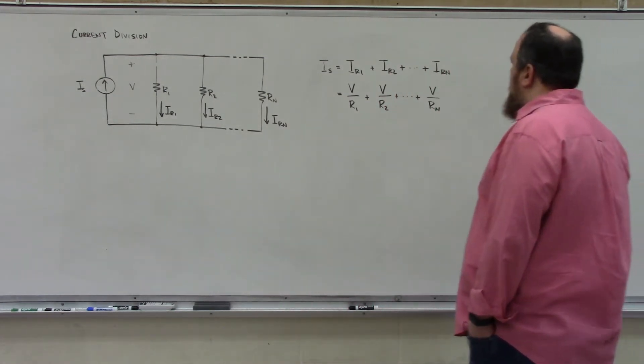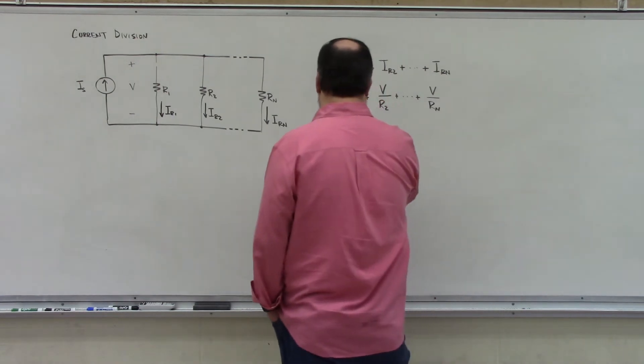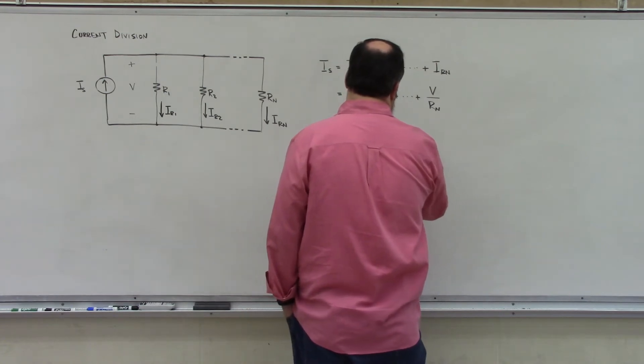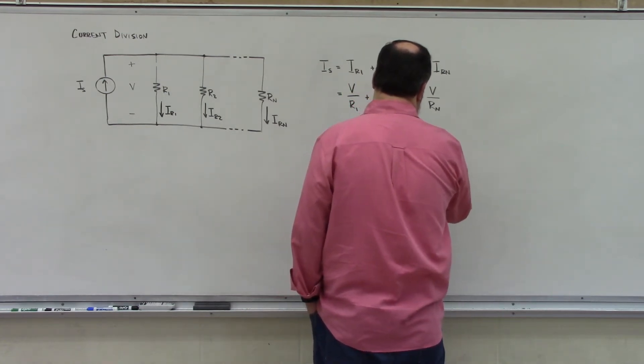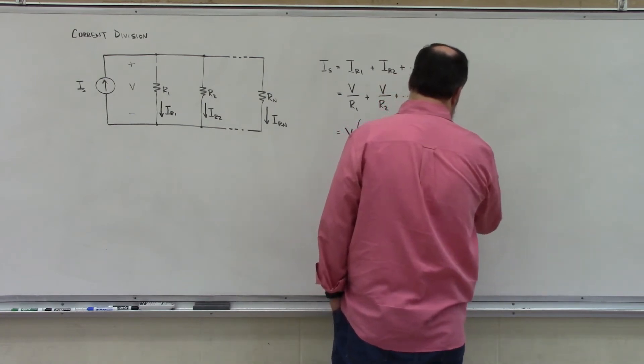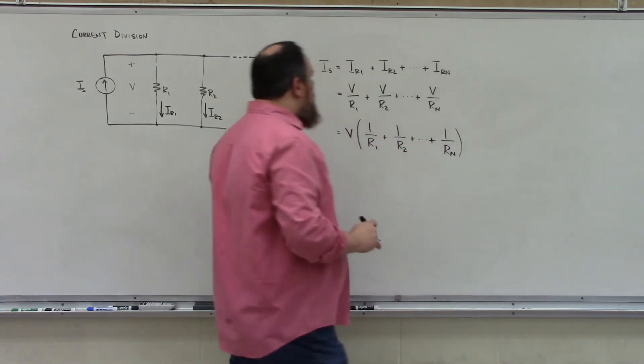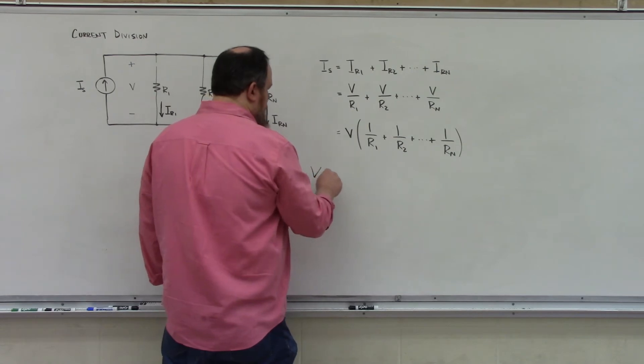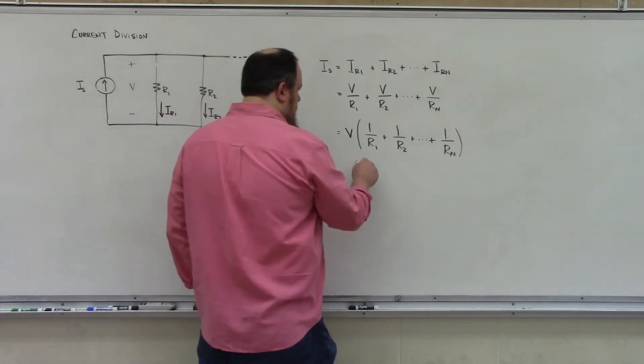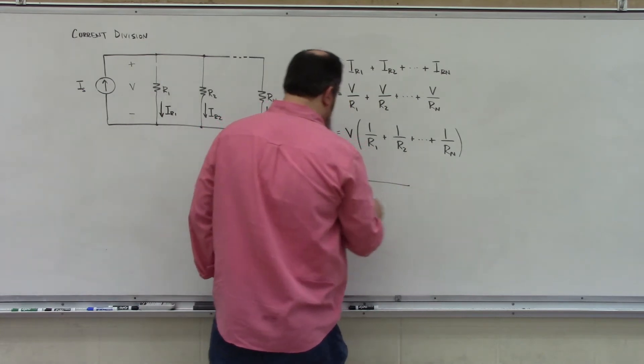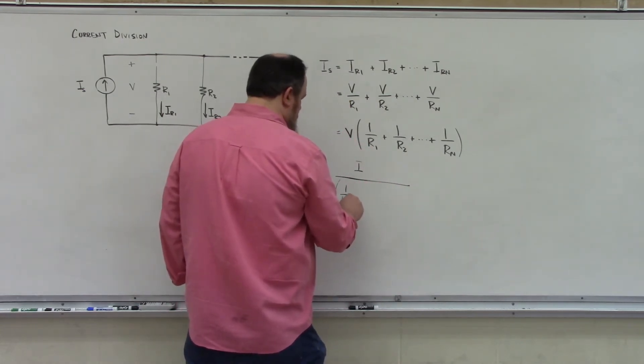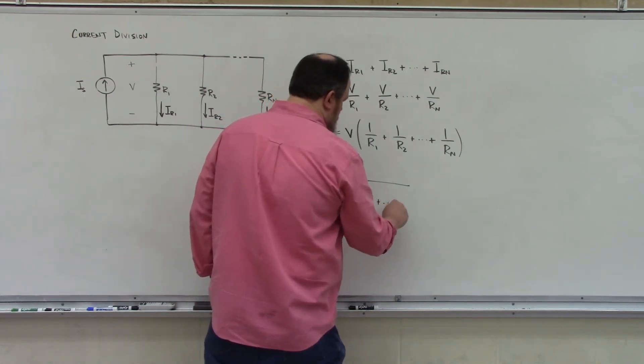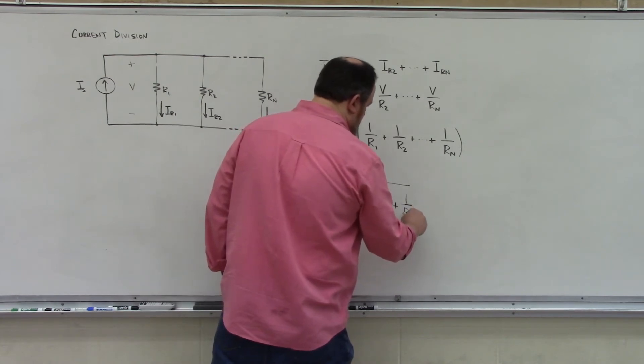I can factor out the common term V, which leaves me with V multiplied by 1 divided by R1 plus 1 divided by R2 plus 1 divided by RN. And I can rearrange using algebra and find that V is equal to IS divided by 1 over R1 plus 1 over R2 plus 1 over RN.